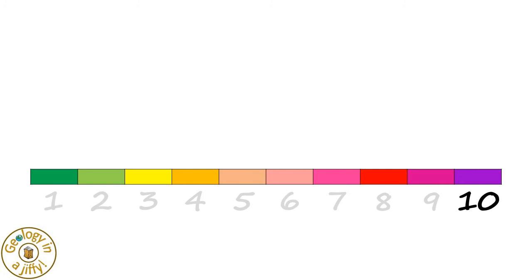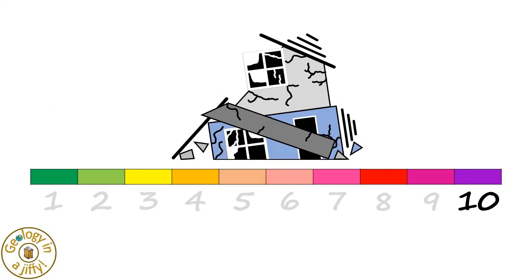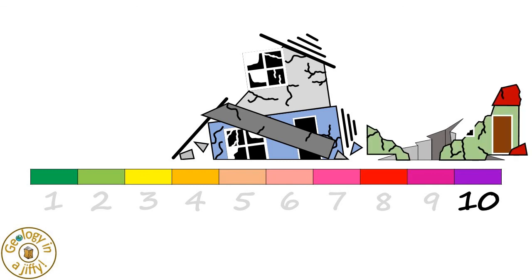Magnitude 10 earthquakes can be felt over 1,000km from the epicentre, with almost total destruction of buildings, the ground opening up with very large chasms, large enough for buildings to topple into.